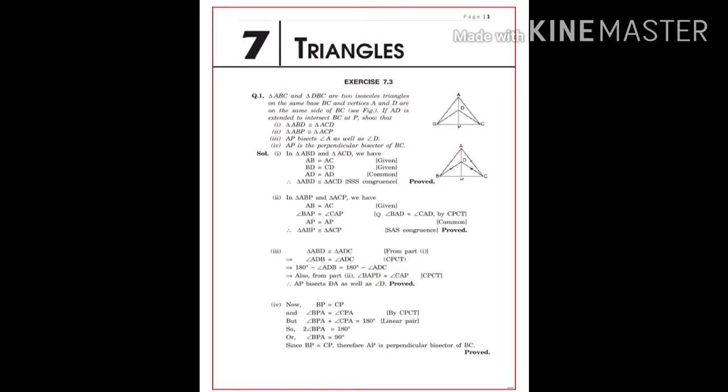Exercise 7.3, Question No. 1: Triangle ABC and Triangle DBC are two isosceles triangles on the same base BC, and vertices A and D are on the same side of BC. As you can see in the diagram, if AD is extended to intersect BC at P, then we need to show the given things. You have two triangles, both isosceles, both on the same base. So let's prove the given things.